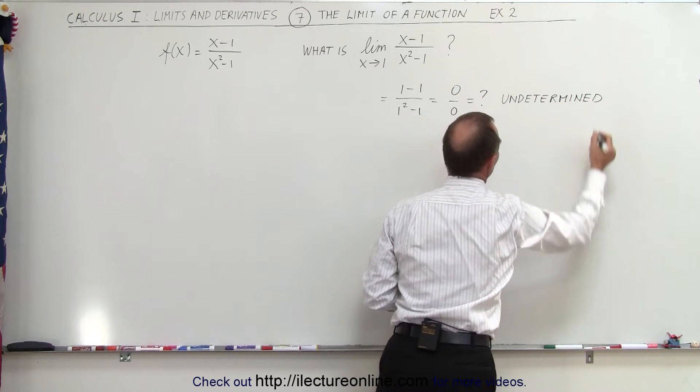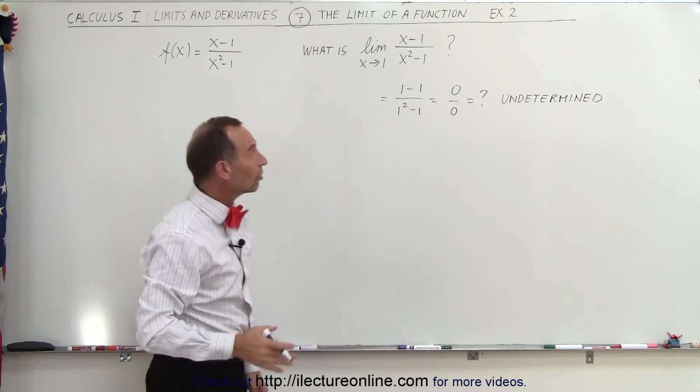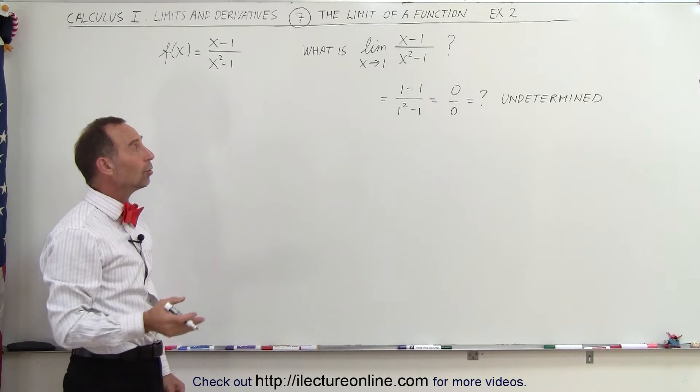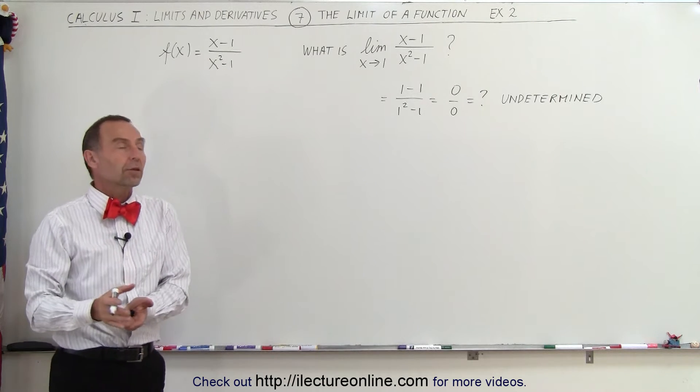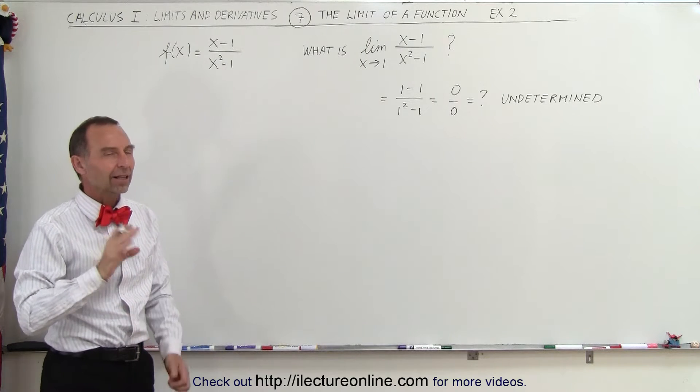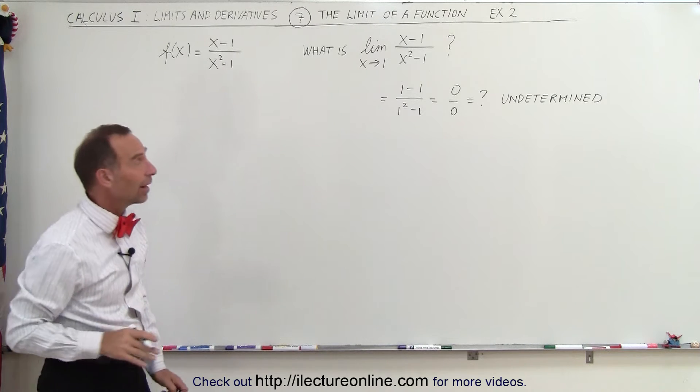Because 0 divided by 0 is undefined. So it looks like we cannot find the limit, or maybe there is no limit. But actually, that is not true. There is actually a valid limit. And so let's see how we can figure that out.